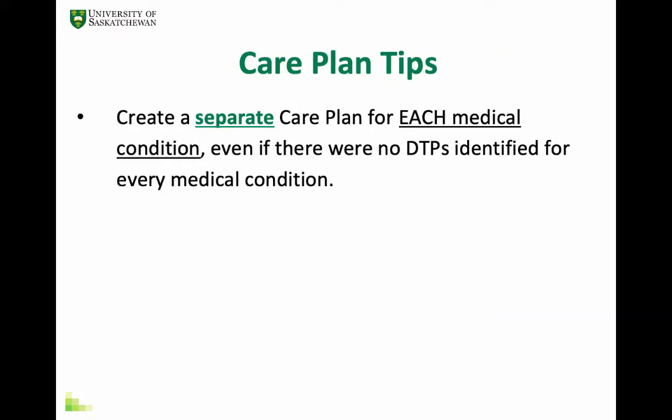Let's start with some important tips about creating care plans. We create a separate care plan for each of the patient's medical conditions, even if you found no drug therapy problems for all of them. For example, if the patient has diabetes, hypertension, asthma, and depression, you would create four separate care plans — even if you only found a problem for the depression. This is important because even if we don't find any problems with the patient's high blood pressure, we still need to think about what to do to prevent problems in the future and when to follow up.